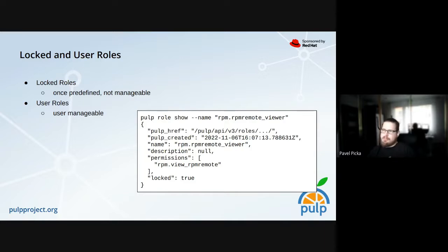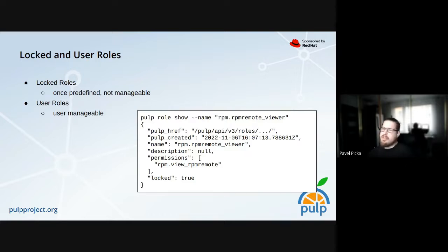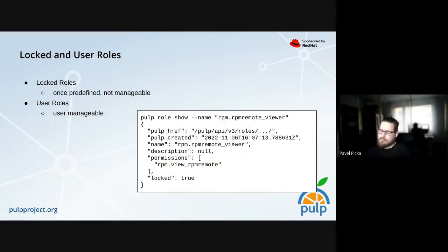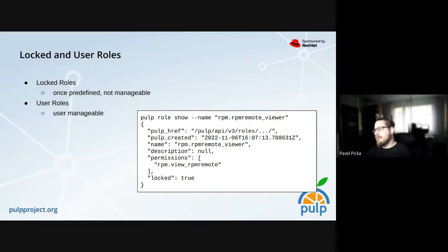Locked roles are managed at the code level. Then there are user roles — as the name says, users can create and fully manage these. Here is an example showing a predefined locked role: the RPM remote viewer. You cannot do anything with it — it's there, you can use it in your user roles but you cannot change it.